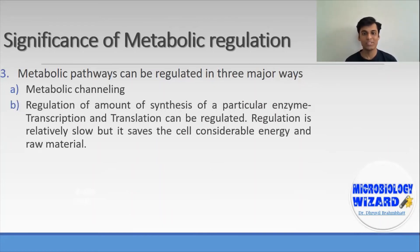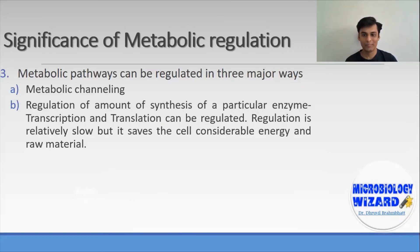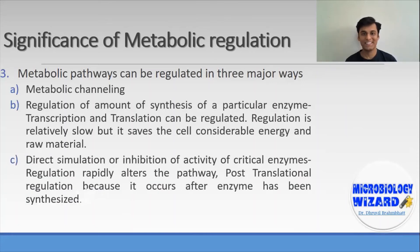To perform these reactions smoothly and efficiently, compartmentalization is achieved through metabolic channeling. The second way is regulation of the amount of enzyme synthesized — how much enzyme is needed for a particular chemical reaction. For example, transcription and translation are regulated; this regulation is relatively slow but saves the cell considerable energy and raw material.